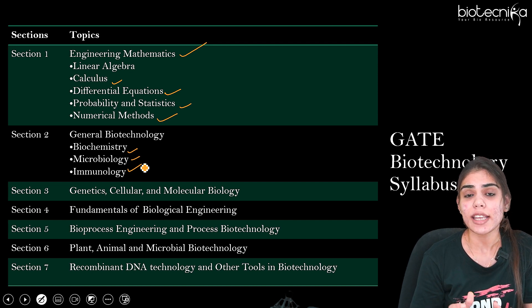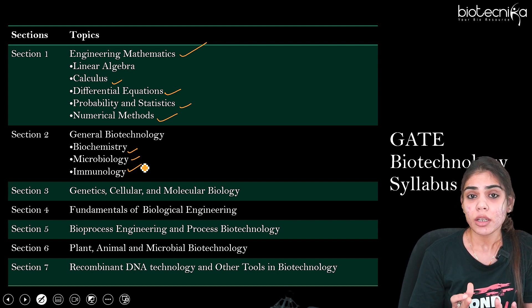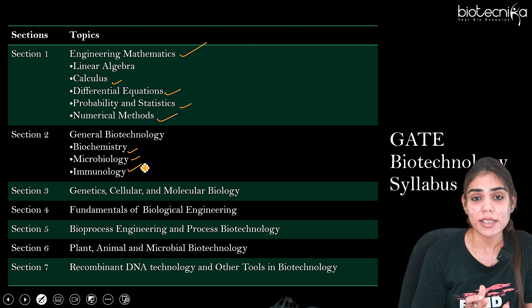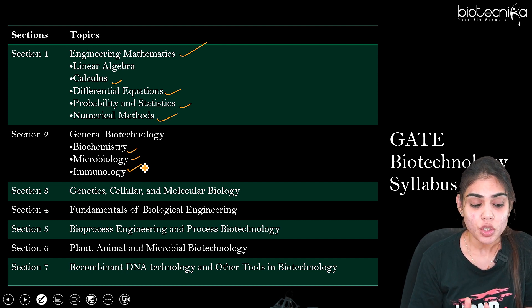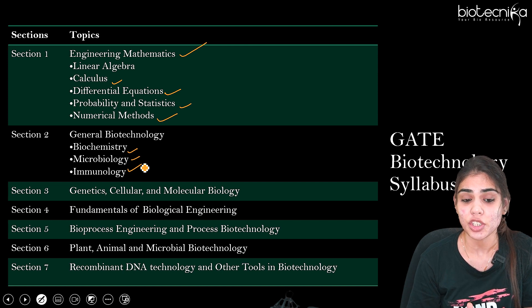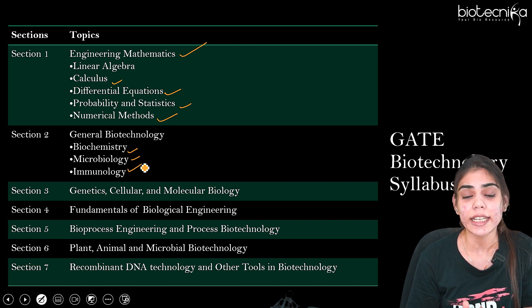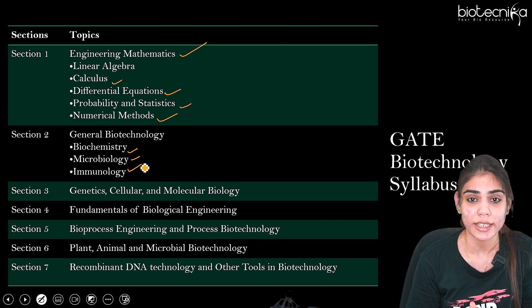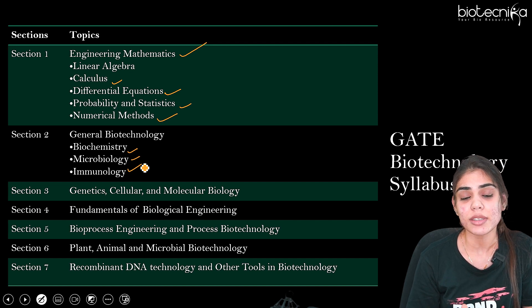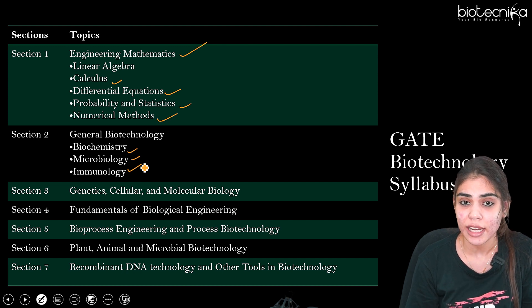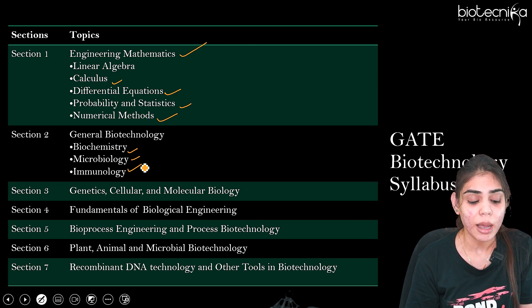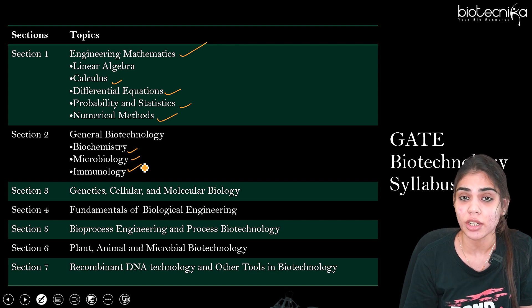Section 7 deals with RDT as well as other tools in biotechnology. Let's see all the sections in detail and what topics are similar for both CSIR NET Life Sciences as well as GATE Biotechnology. We will be starting with Section 2, that is General Biotechnology. I'm skipping Section 1, Engineering Mathematics, because this section is not in the CSIR NET Life Sciences syllabus, so you have to cover it separately.